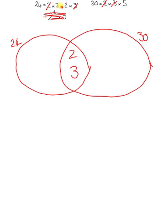The other numbers, we haven't got any more numbers that are in common, so replace them. These two numbers are the other numbers for 24 and in the circle for 30 we also need a 5.